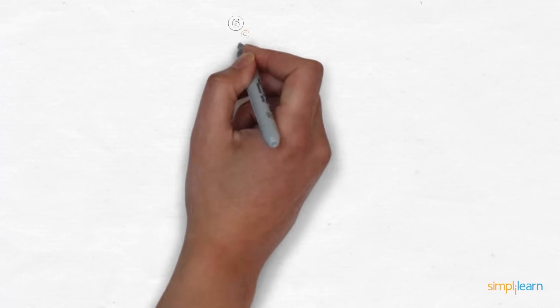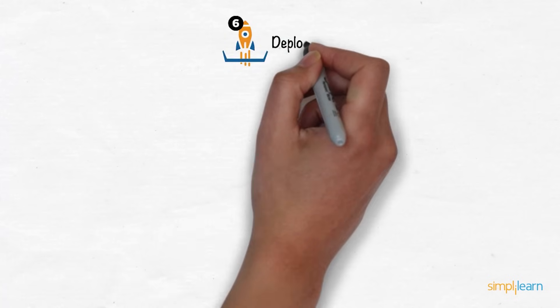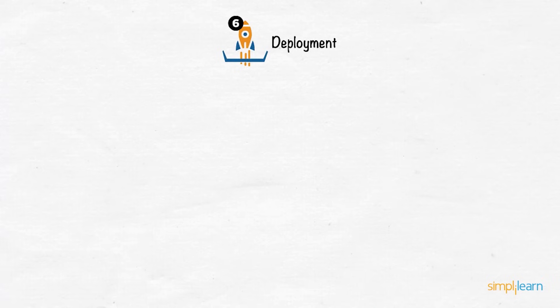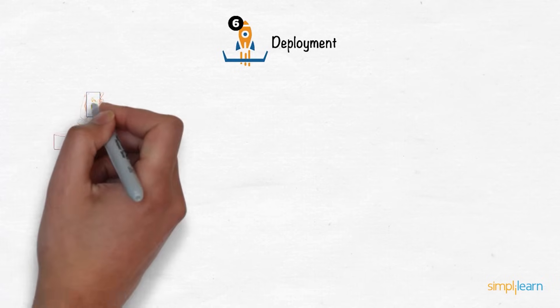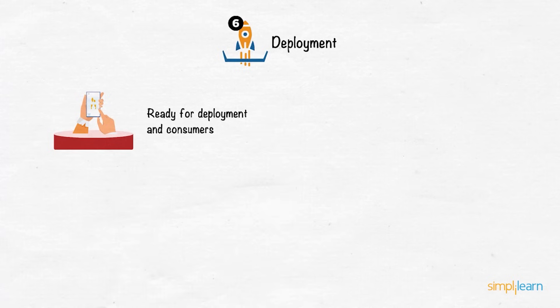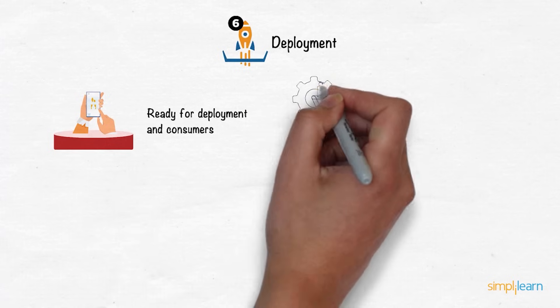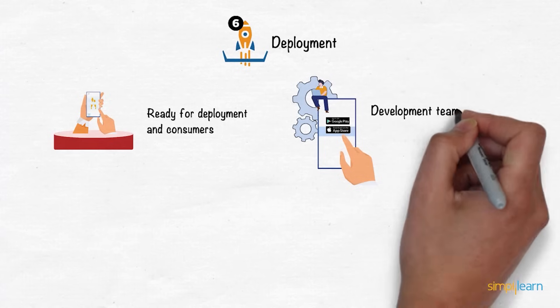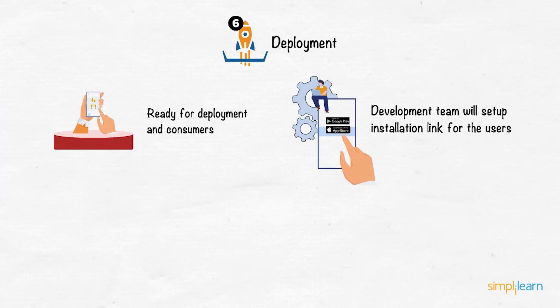As for the last stage in the SDLC lifecycle, the deployment and maintenance phase is initiated. With the testing phase completed, the software application is ready for deployment and consumer use. In this phase, the development team will set up links for the application and make it accessible to the users.